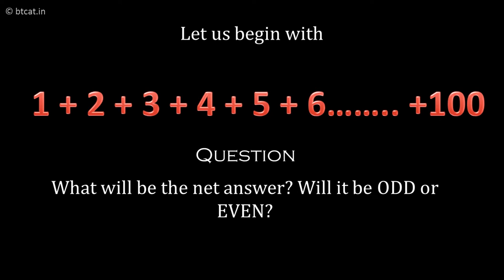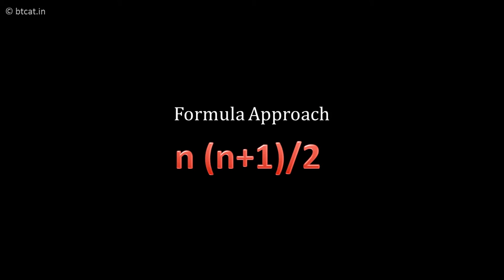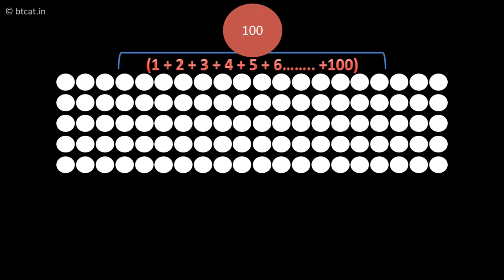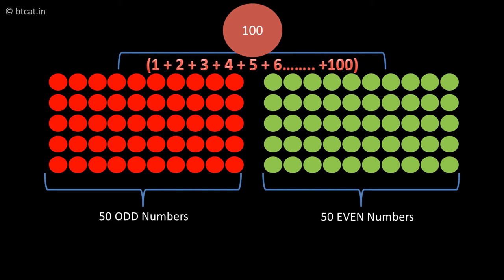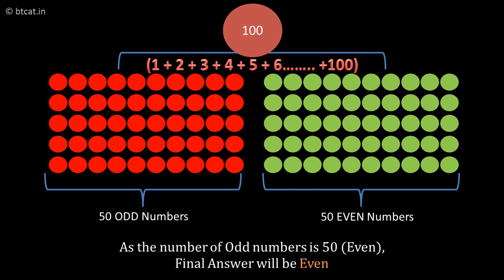Of course, we can find the answer using the formula n(n+1)/2 for the first n numbers. But we're not interested in that right now—we just want to know whether the answer will be odd or even. In the sequence 1 + 2 + 3 + ... + 100, there are 100 numbers total, out of which 50 are odd numbers. Therefore, the net answer will always be even.